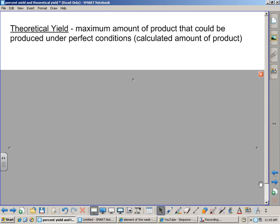Alright, so we're starting with theoretical yield today. Theoretical yield is the maximum amount of product that can be produced under perfect conditions. The calculated amount of product.